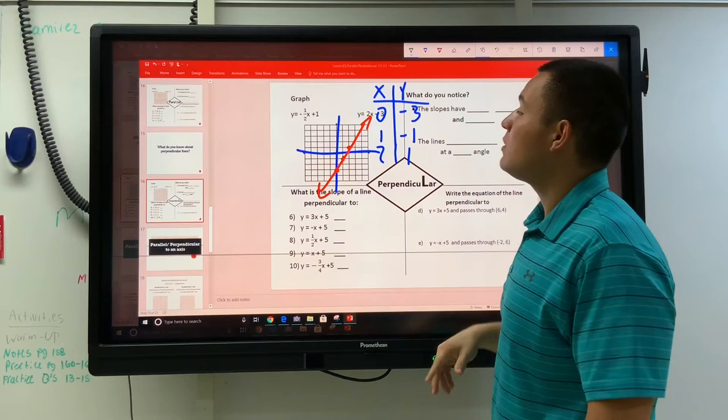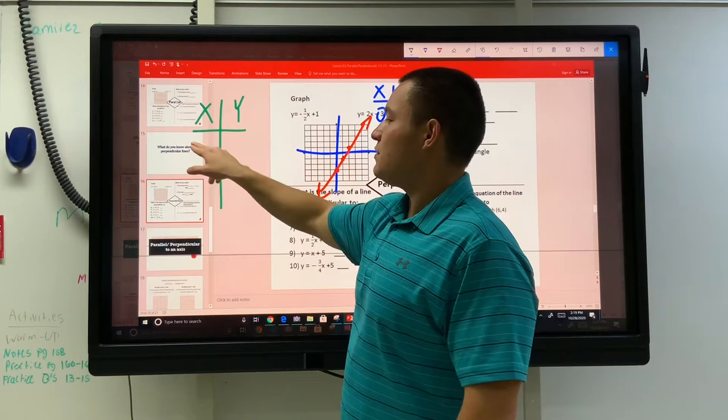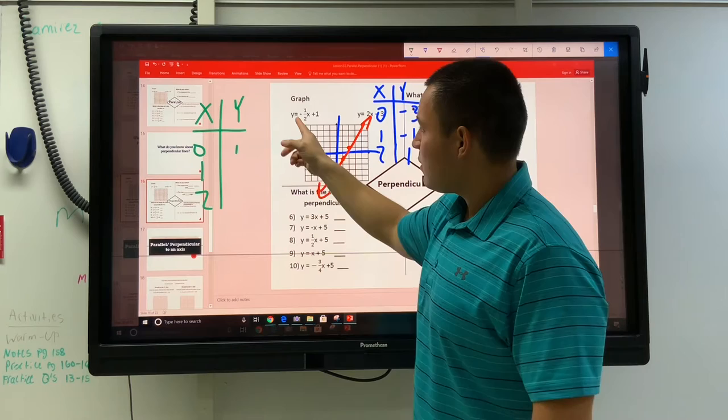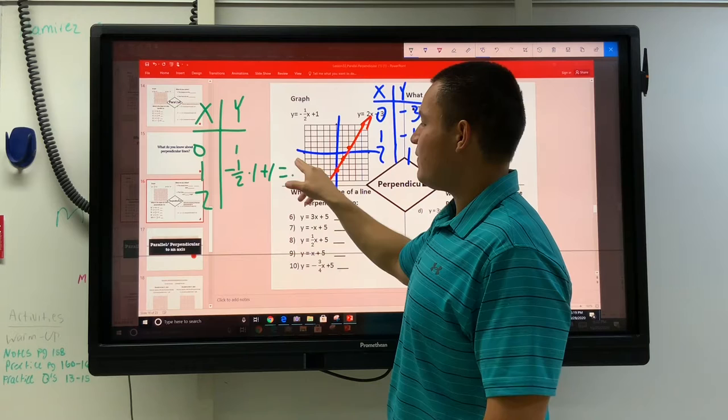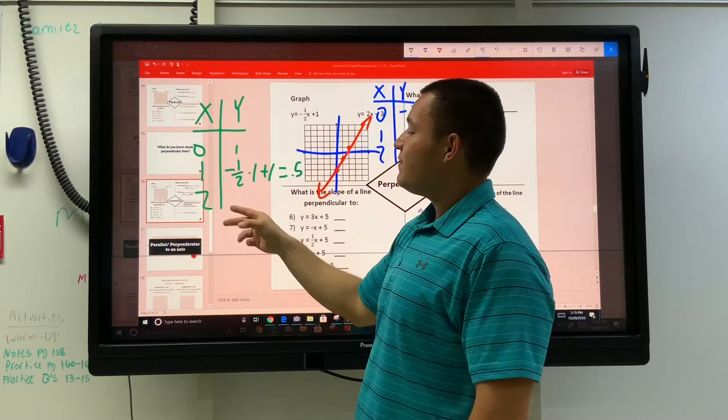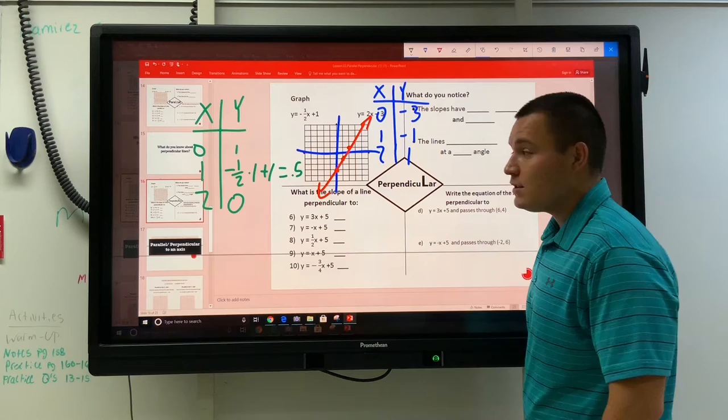Negative 1/2 x plus 1. x, y, 0, 1, 2. That's gonna make 1. I'm doing a half, so this one's gonna make - ooh, we're going down. This is a negative. So I do negative 1/2 times 1 plus 1 to get 0.5. 2 times negative 1/2 is gonna be negative 1 plus 1, it's gonna make 0. My points are 0, 1 and I can't do a half on this tiny graph, so I'll do 2, 0.